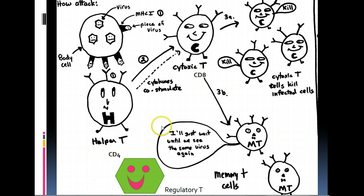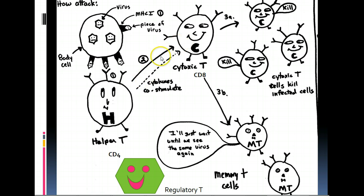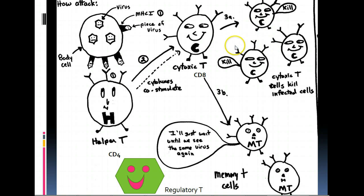Cytotoxic T is also called a CD8 cell, and helper T cell is also called a CD4. Once the body finds the right helper T that matches with this virus and finds the right cytotoxic T that matches with the virus, these two cells will co-stimulate each other with chemicals called cytokines. You have to have both of these — the right helper and the right cytotoxic. They co-stimulate each other, which stimulates the correctly fitting cytotoxic T cell to go through mitosis, and now it will make thousands of itself.